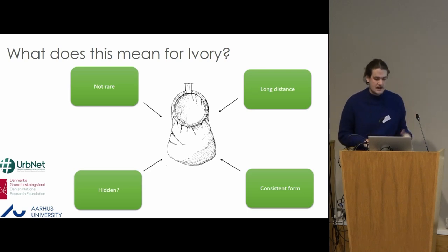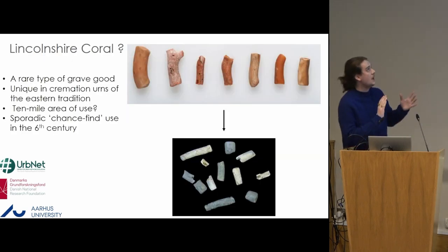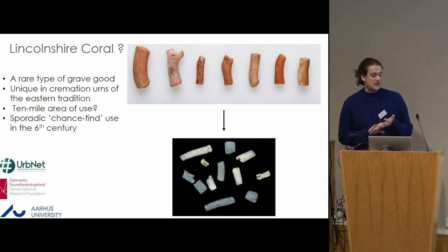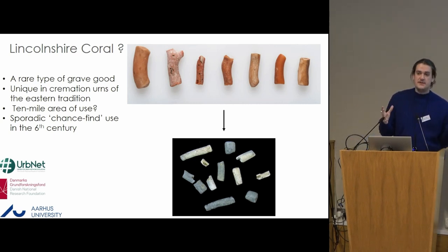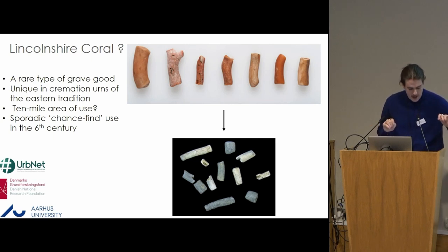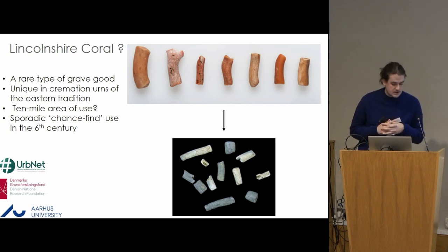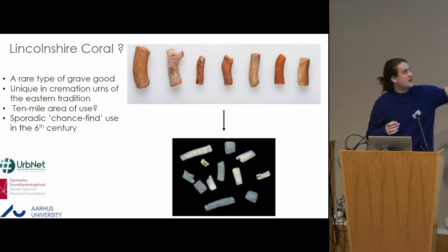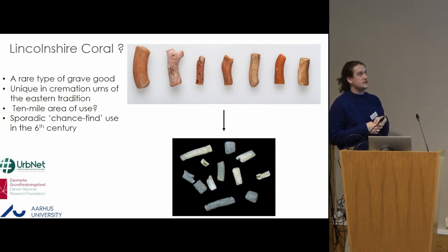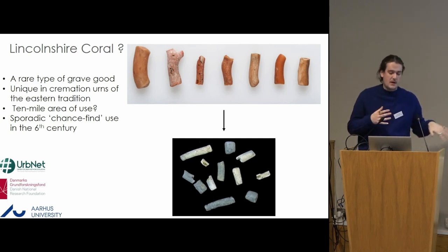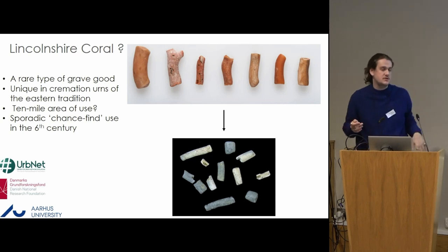Moving on to coral — it's a unique grave good in early medieval England, coming from two cremation cemeteries in northern Lincolnshire: Cleetham and Elsham, within a 10-mile radius. So it seems very rare in this wider context, but within these two sites it's actually very abundant. There are over 110 beads in total from Cleetham and another 90 or so from Elsham — 200 beads from a 10-mile radius. This coral was probably collected in India. At the bottom you can see what happens to coral when it's cremated: it changes color, which may explain why we don't see coral more widely.